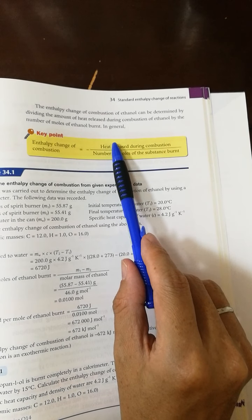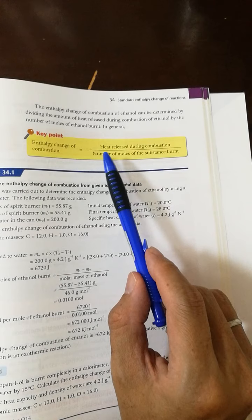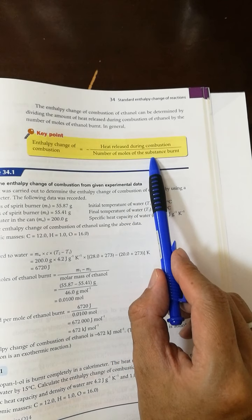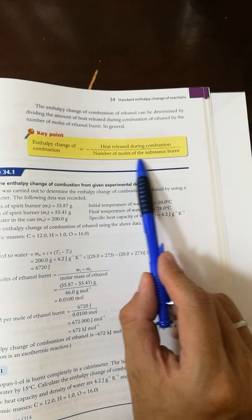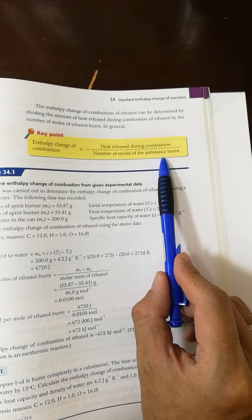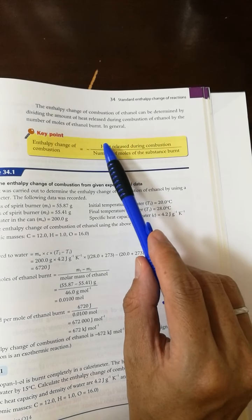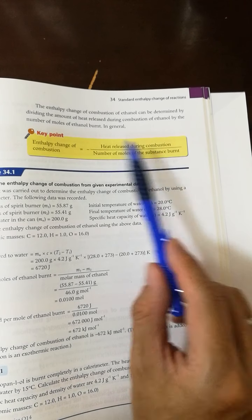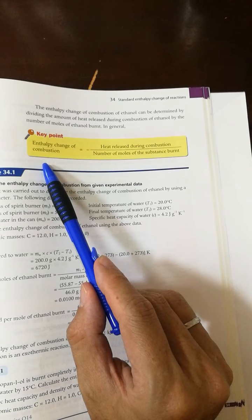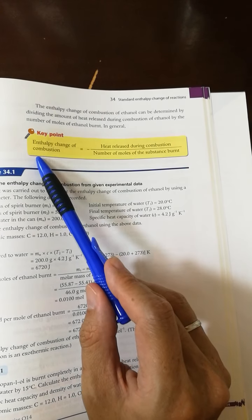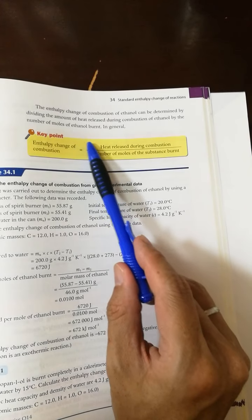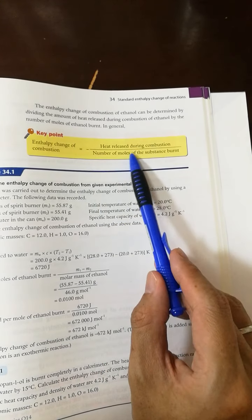Then you need to find out the number of moles of ethanol burned in this experiment. And heat over the number of moles of ethanol burned in this experiment gives the enthalpy change of combustion. And combustion reaction usually is exothermic, so we put a negative sign in front of the term.